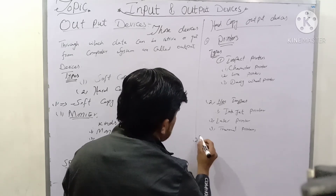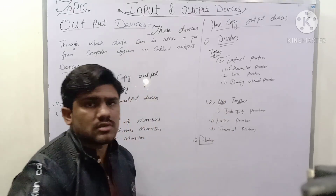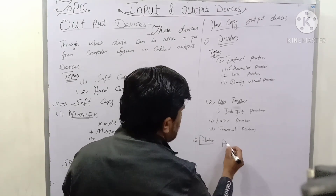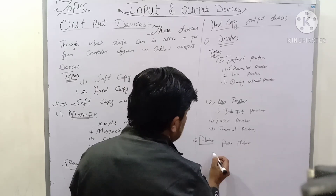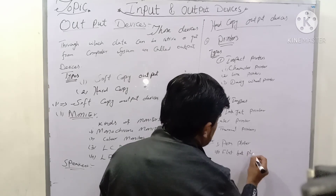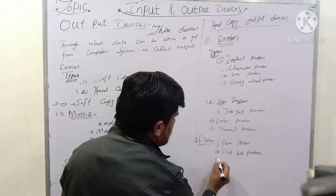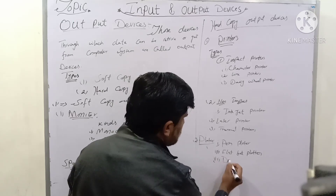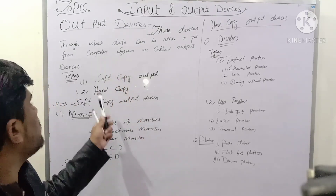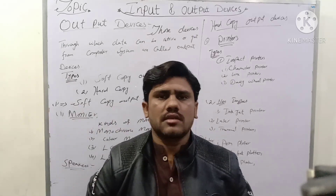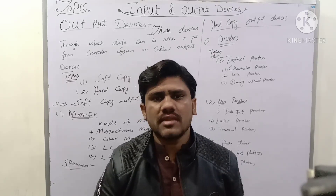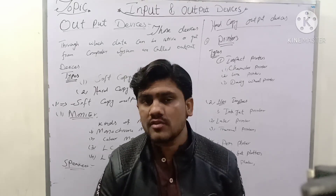Plotters are also hard copy output devices. Types of plotters: pen plotters, flat pad plotters, and drum plotters. These are the types of hard copy output devices. This topic — input and output devices — is very simple and easy. I hope you understood. Thank you very much.